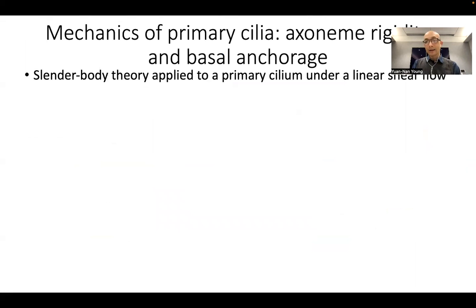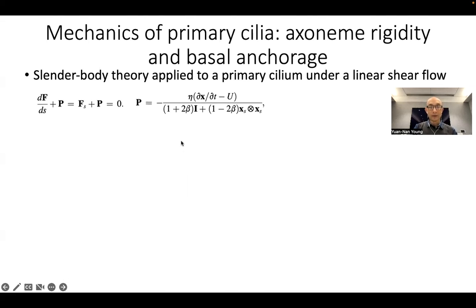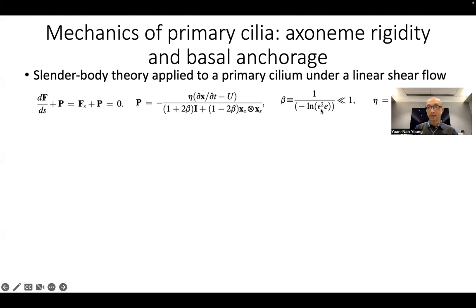As a first attempt to understand the biomechanics of the primary cilium, we want to separate the chemical signaling from the mechanical bending and just understand how the primary cilium bends under external flow as a mechanical problem. To achieve this, I assume the primary cilium is like a slender body, characterized by its slenderness beta, which is a function of the aspect ratio epsilon. Epsilon is the diameter of the cilium axoneme to the contour length of the primary cilium — usually on the order of 10⁻¹ to 10⁻², so it's very small, which justifies the slender body modeling approach.